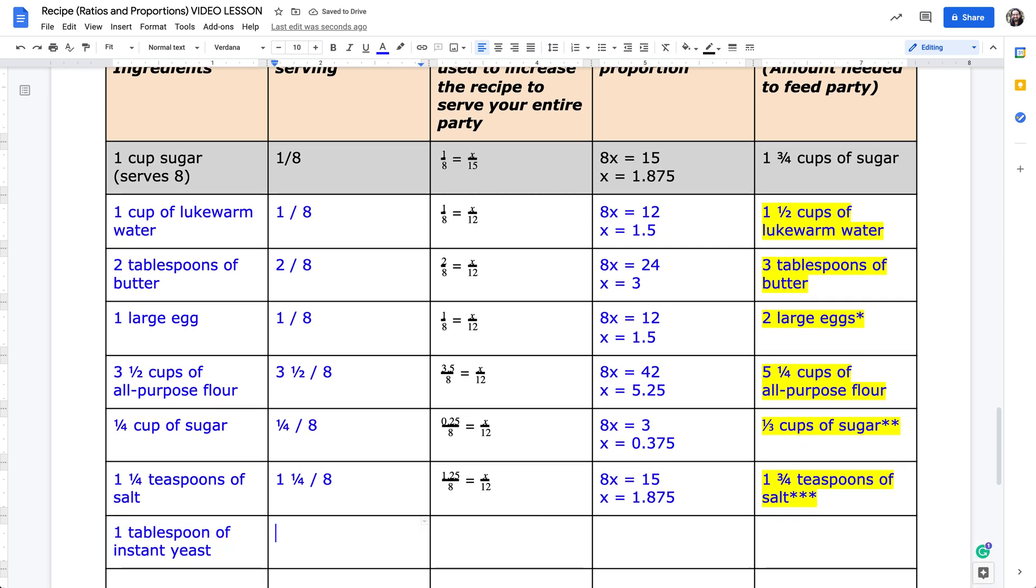My last ingredient is one tablespoon of instant yeast. Notice here, I'm using one again, which is the same value I used in this row and in this row. So the work happens to be the same all across from here to here. So I can simply copy paste this into these rows here. One to eight, same proportion as before. One to eight equals x to 12. We get 8x equals 12. Divide both sides by 8, again get x equals 1.5. I write this adjusted ingredient as 1.5 tablespoons of instant yeast.